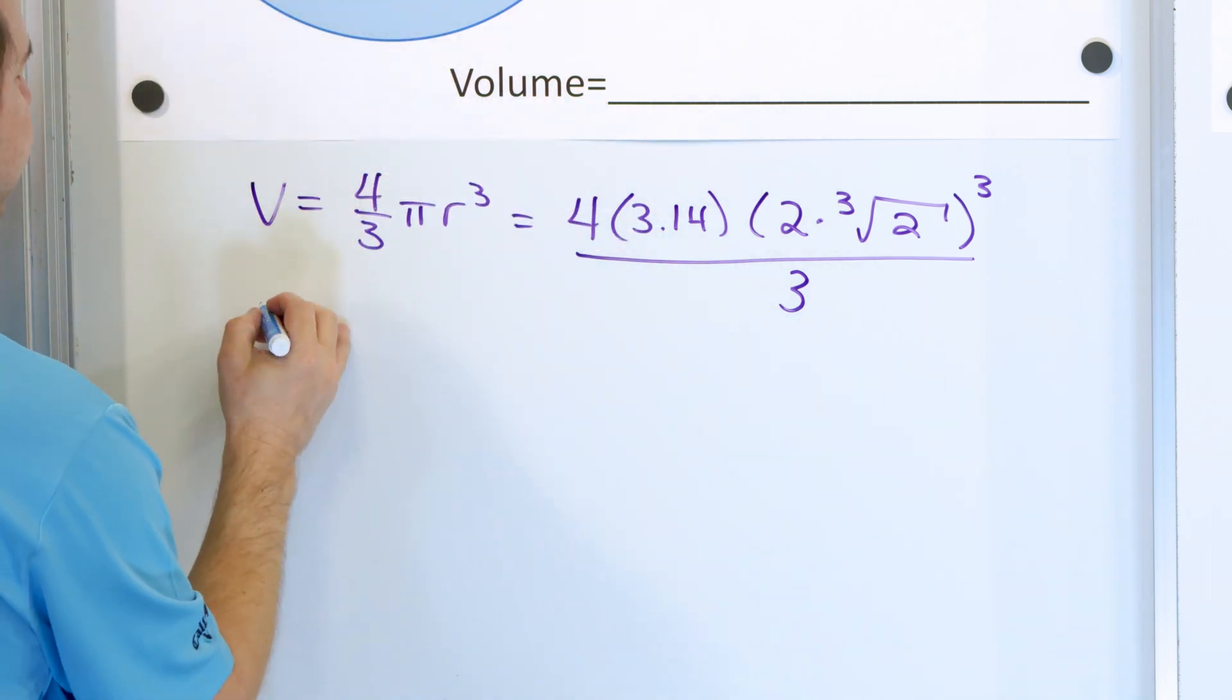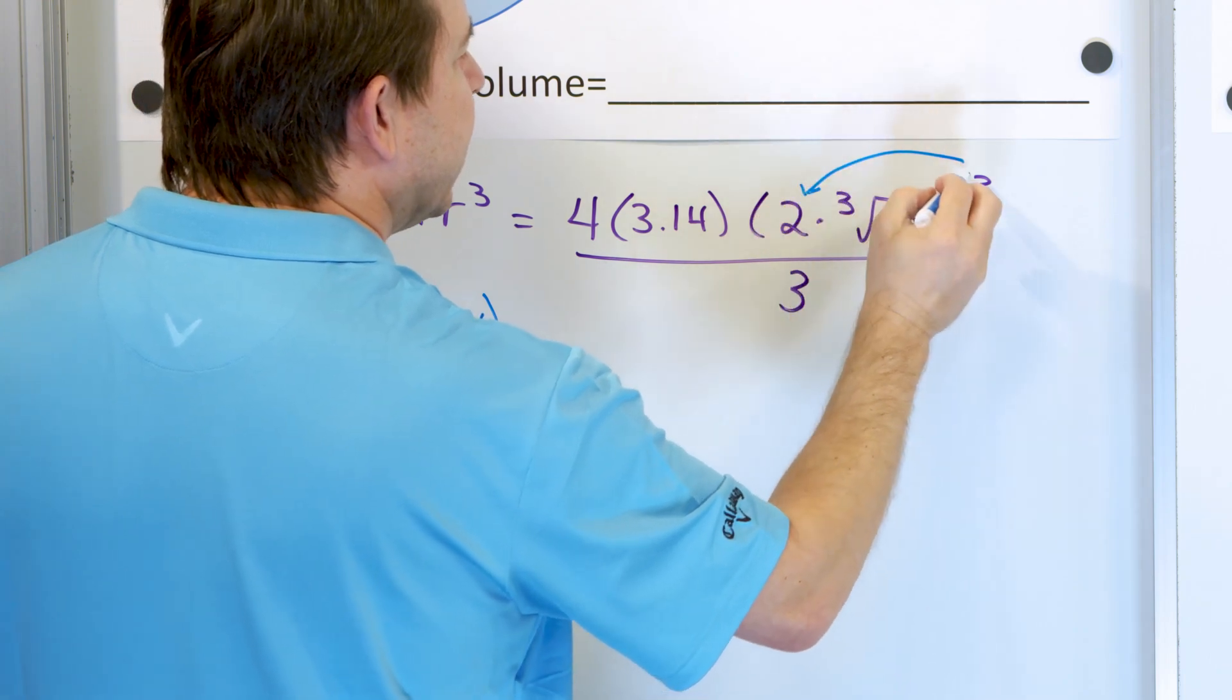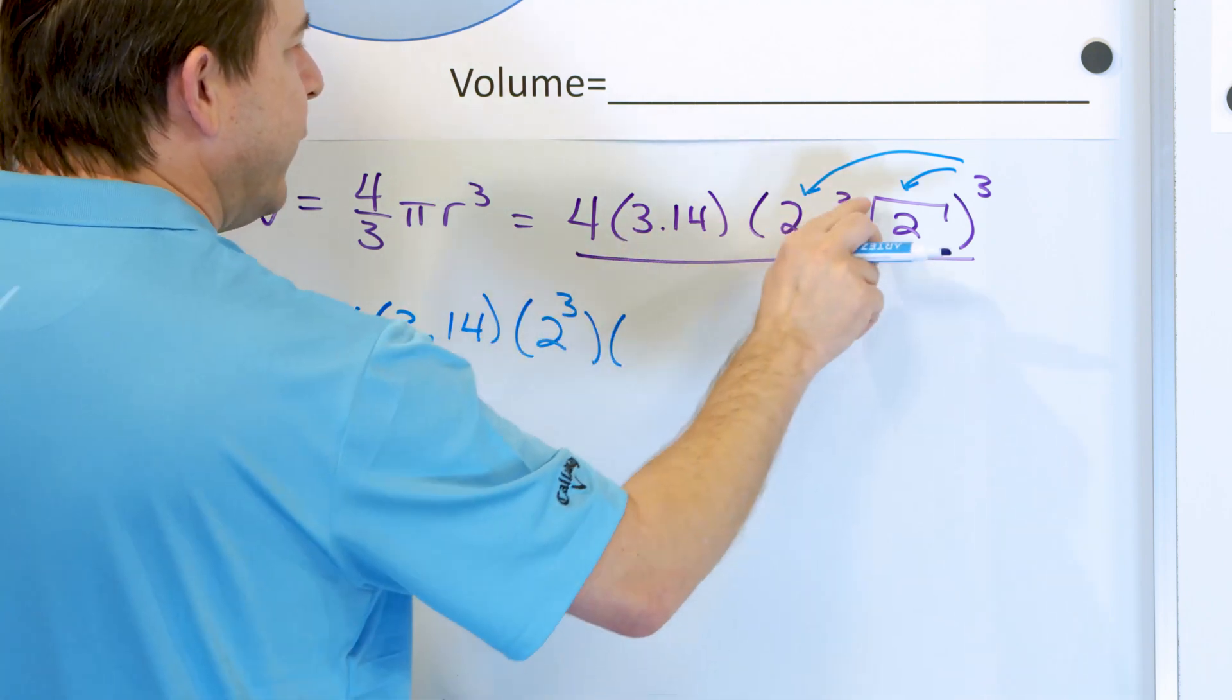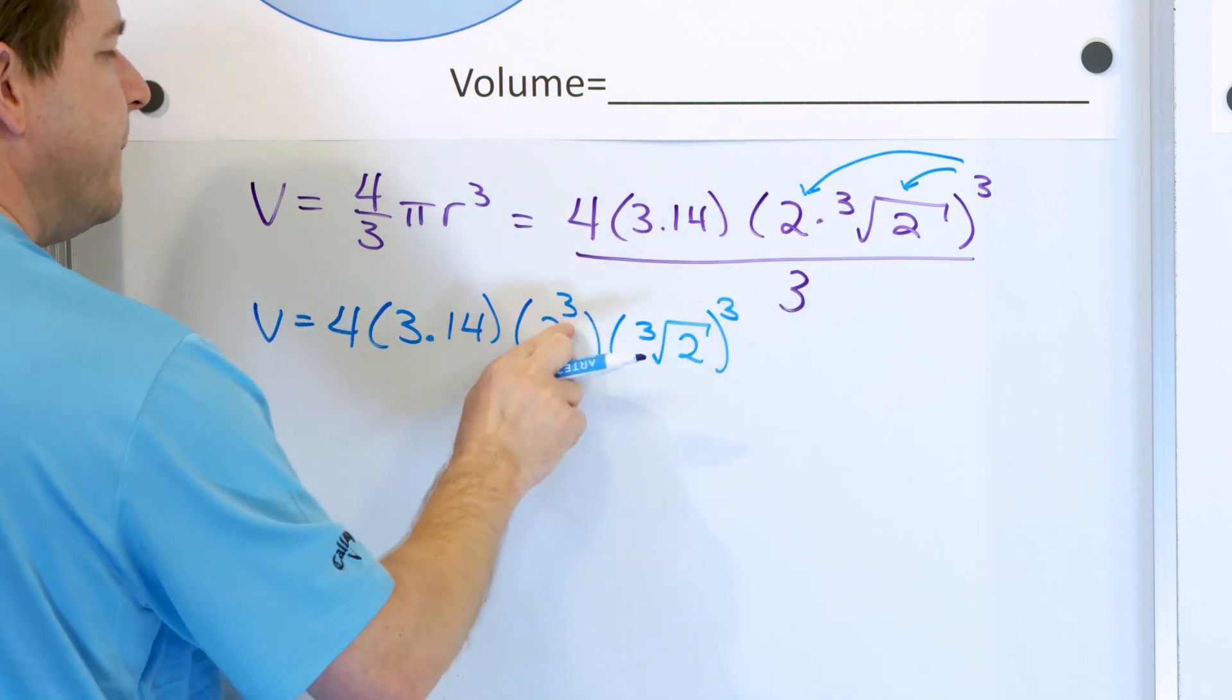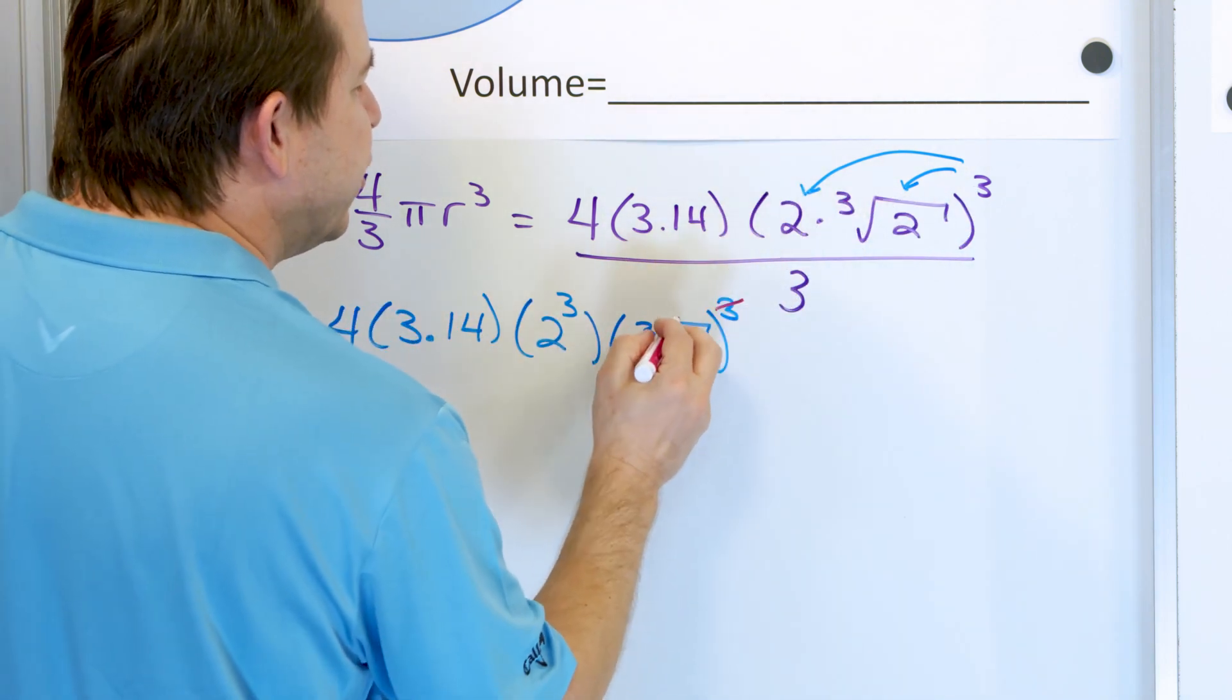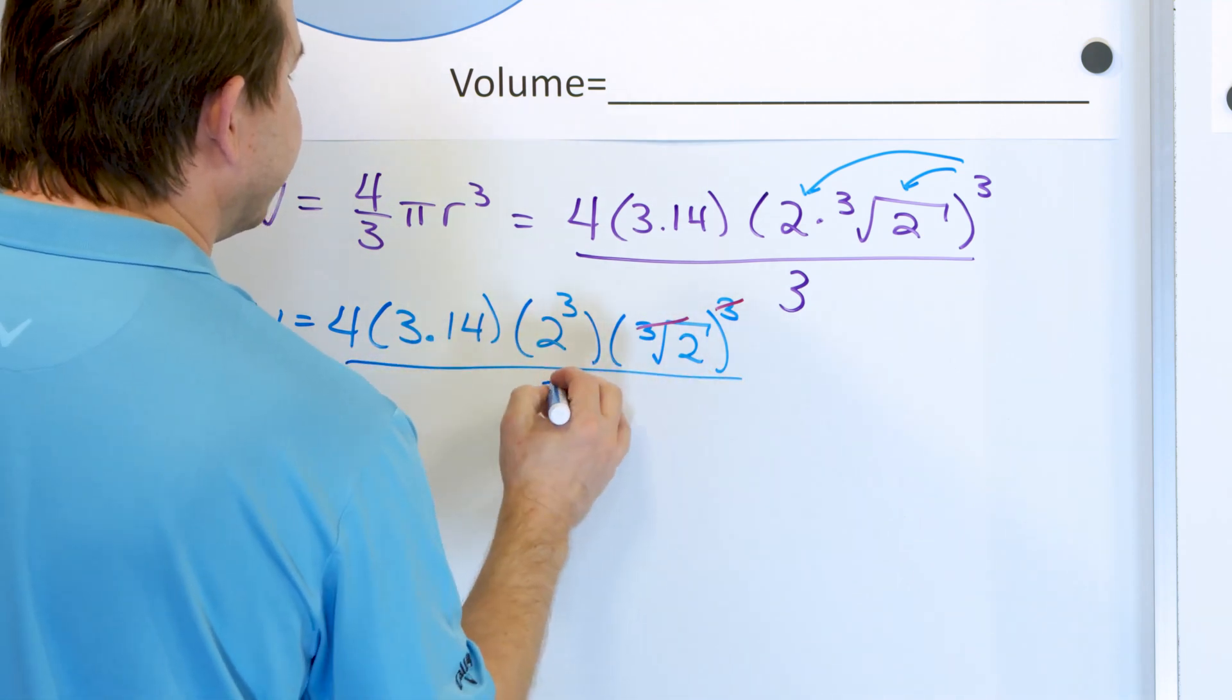Alright, so let's kind of take care of what we have on the end there. We have 4 times 3.14. Now this exponent is going to end up applying here and here. So we're going to have 2 cubed, and I'm going to multiply that by the cube root of 2 also cubed. So you make this cubed and you make this cubed and they're multiplied together. Now the neat thing about it is that whenever you apply a cube to a cube root, the cube and the cube root are opposites. So they cancel just like the square and the square root are opposites.